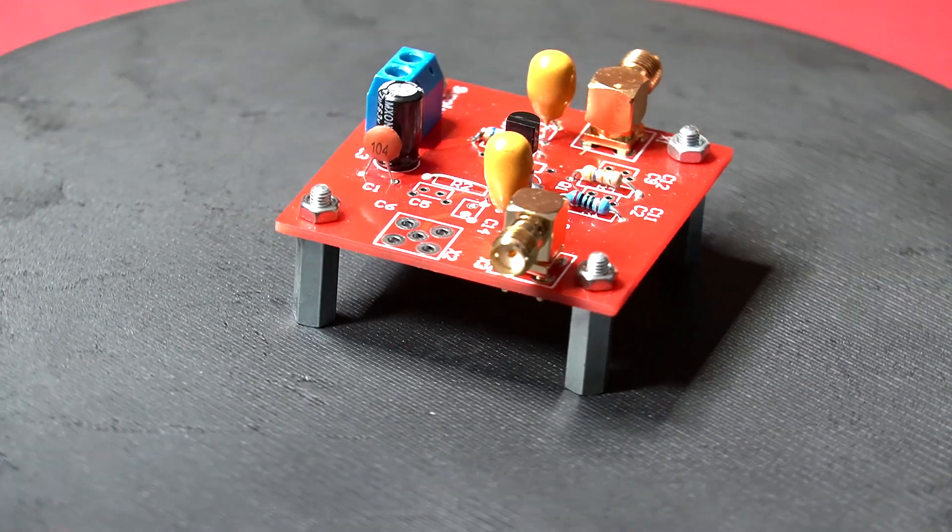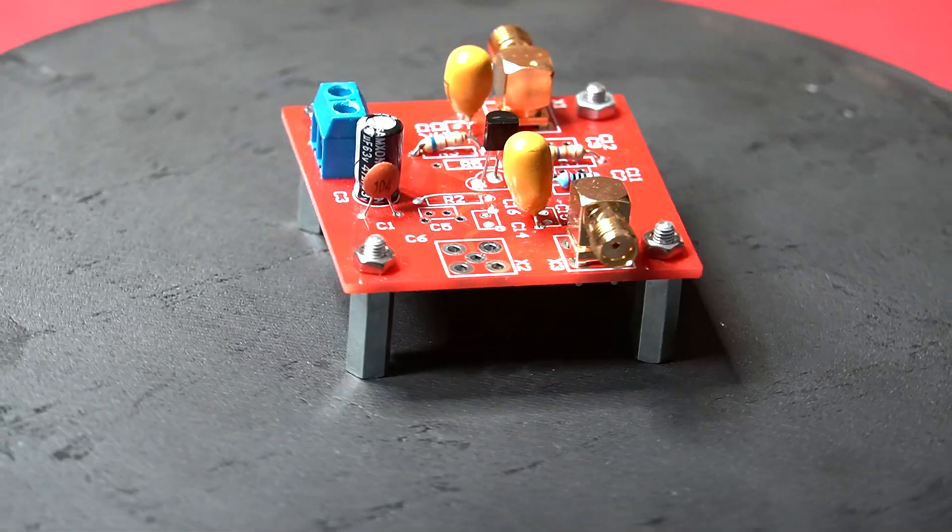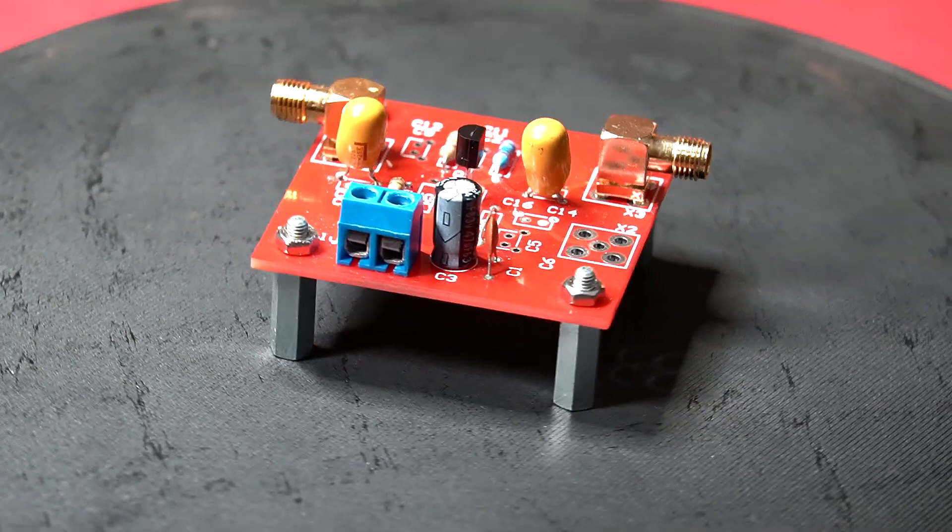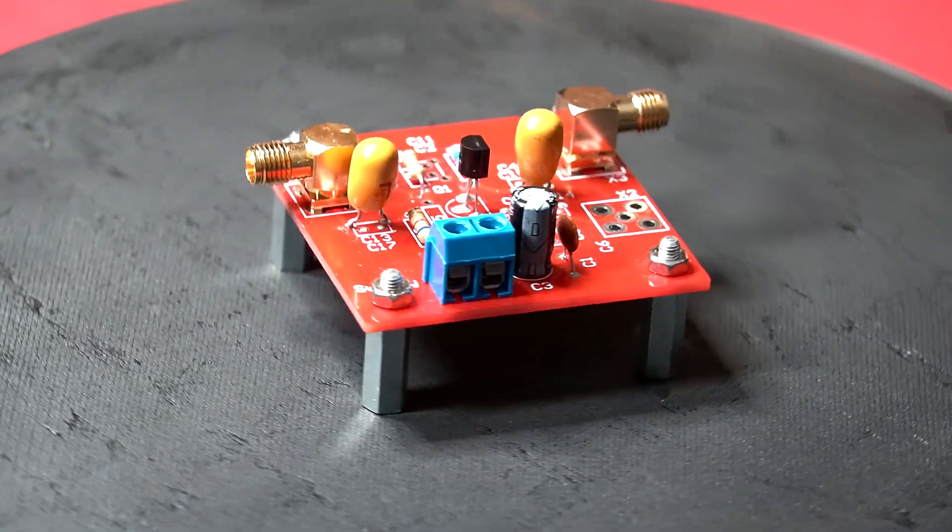And this is the final board, a 5x5cm design, with a set of spacers at each corner, just so it sits nicely on the table. Let's start testing it.